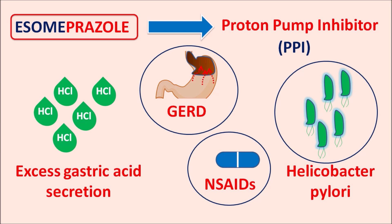NSAIDs are going to inhibit the prostaglandins, which are responsible for reducing gastric acid secretion. So with NSAIDs, gastric acid secretion is excessively increased, which may lead to gastric ulcers. In all these conditions, S-omeprazole can be used as a proton pump inhibitor.